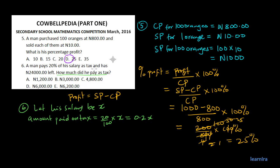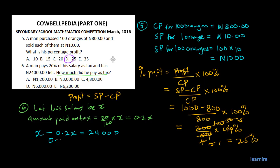The man pays 20% of his salary as tax and has 24,000 naira left. His total salary is X, the amount paid on tax is 0.2X, and the remaining amount is 24,000. So X minus 0.2X equals 24,000, which gives us 0.8X equals 24,000.